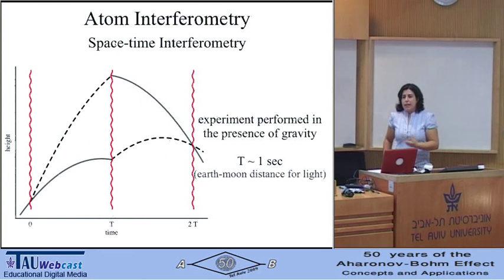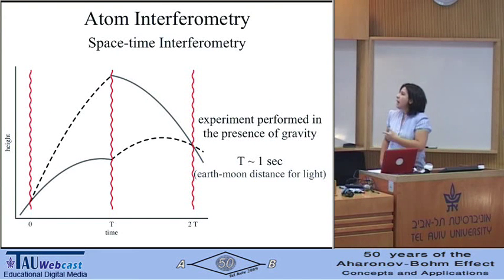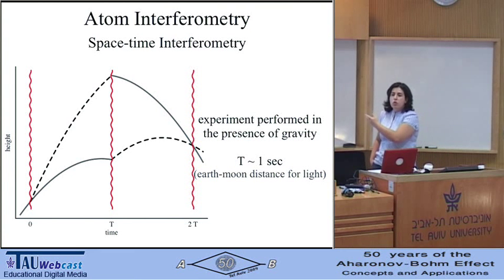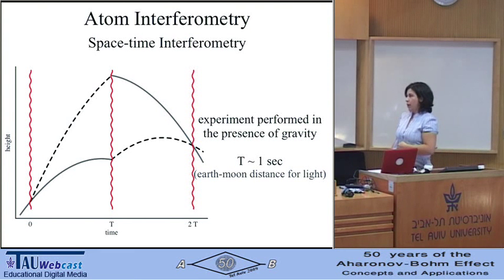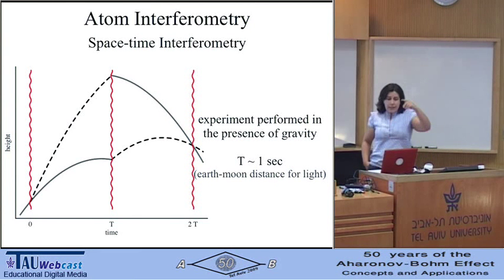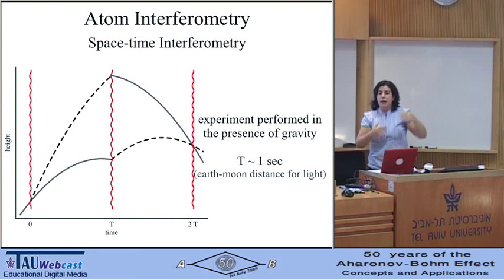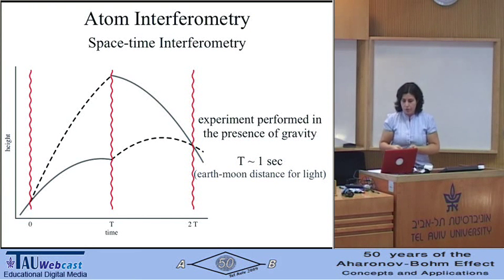Another thing to keep in mind is that the experiment happens in the presence of the gravitational field of the Earth. As a result, the space-time trajectories will be curved, and this constrains the duration of the experiment to be roughly one second. The fast and slow components of the wave function get separated, reach different heights, and this is something I will use in the experiment I will describe.